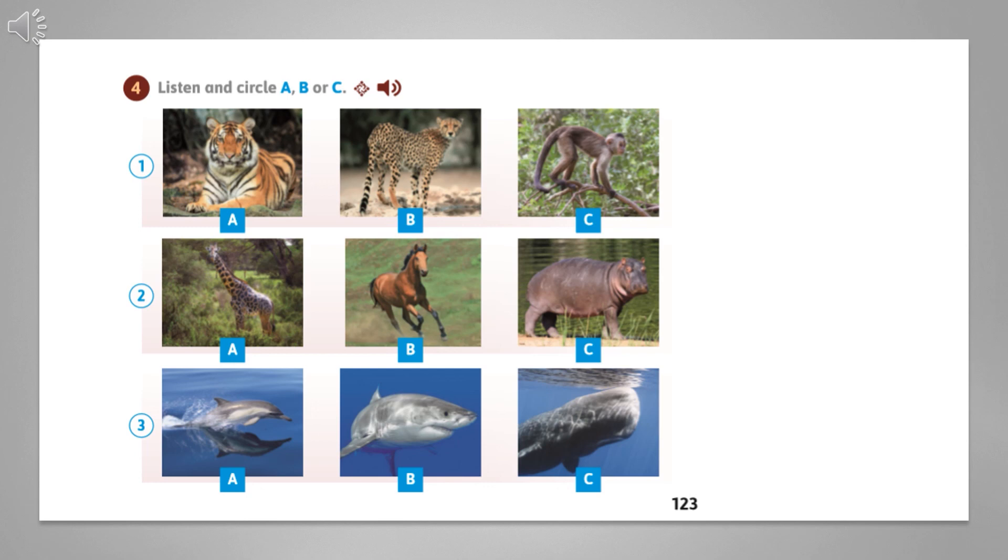So number one, which is the fastest animal in the world? The cheetah, good. Number two, which is the tallest animal? It's the giraffe, thank you very much. Number three, which is the biggest animal in the sea? The whale. Fantastic boy, thank you. I'm happy with you today.